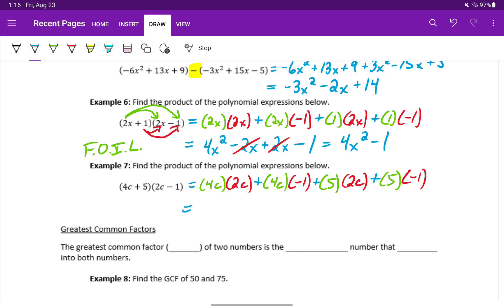From there, we'll multiply together and then simplify if we can. This will be 8c squared minus 4c, plus 10c minus 5. Then we can combine those two like terms in the middle to get 8c squared plus 6c minus 5.